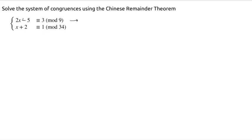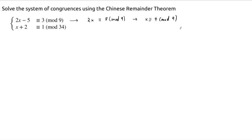Remember, congruences obey linear properties, so we can just add 5 to the other side. This one will then say that 2x is congruent to 8, modulo 9. Then we can find the inverse of 2 modulo 9 and multiply through. Because these numbers are both less than 9, this is pretty straightforward — 2 times 4 is 8, and 8 is obviously congruent to 8 modulo 9. So x is congruent to 4, modulo 9.